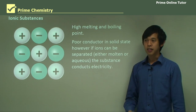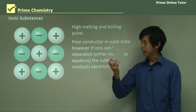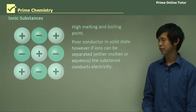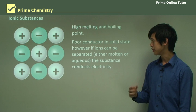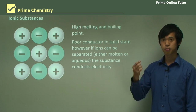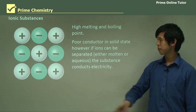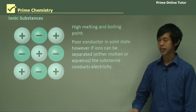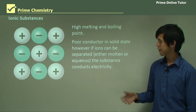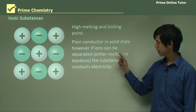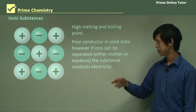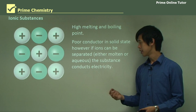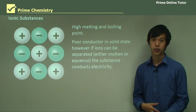You'd be surprised by the fact that even though there's so much charge present, ionic substances are actually poor conductors of electricity in solid state. In the solid crystal form, they're very poor conductors. But if you can separate them — either in molten or aqueous state — the substance can conduct electricity very well.